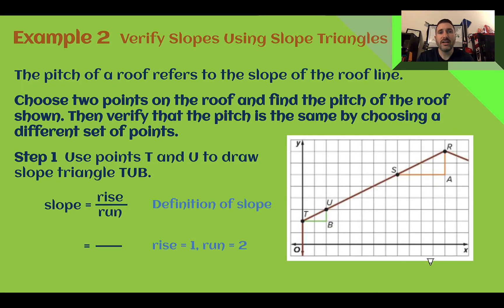Example two, verify slopes using slope triangles. The pitch of a roof refers to the slope of the roof line. Choose two points on the roof and find the pitch of the roof shown. Then verify that the pitch is the same by choosing a different set of points. So step one here, let's use points T and U to draw the slope triangle. We have T, U, B right here. We will need the ratio of the rise over the run. So our rise here was one, our run here was two, so one over two. Based on this first triangle, the pitch of the roof is one half, meaning the slope of this line that's forming the edge of the roof is going to be one half.